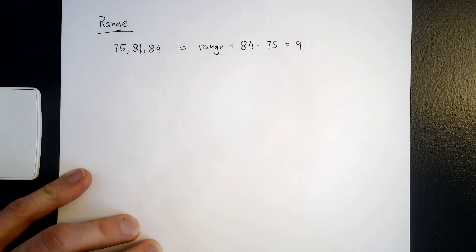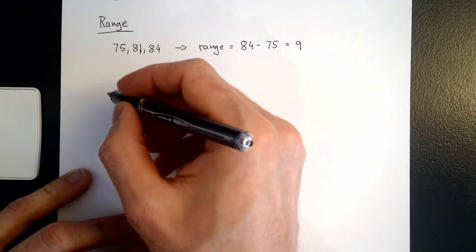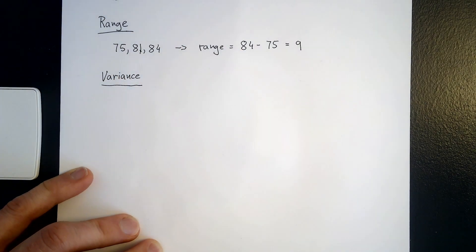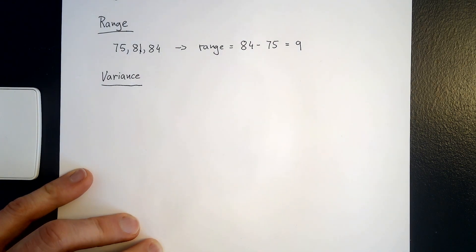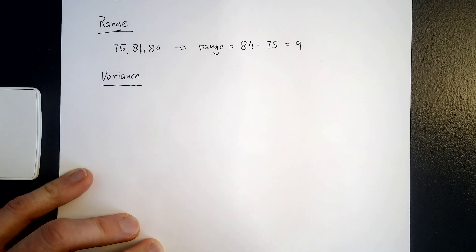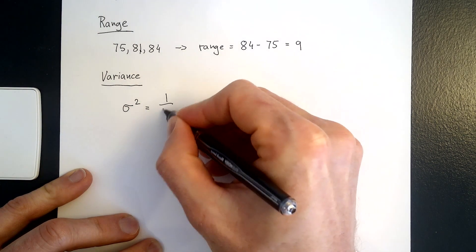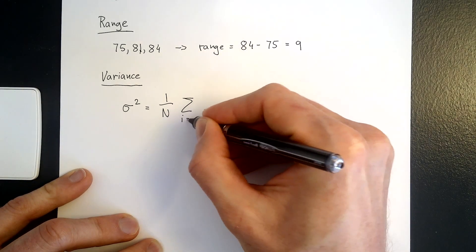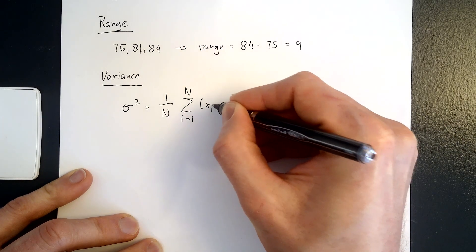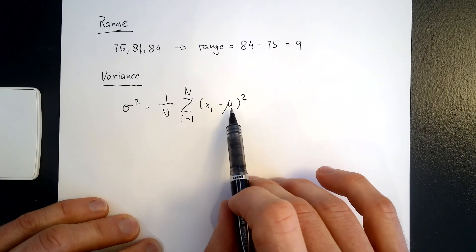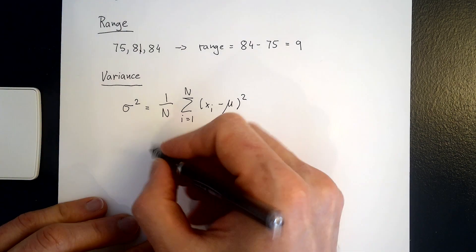A more useful measure of dispersion is the standard deviation and the variance. We have to distinguish between the population variance and the sample variance. Since we assume those 3 students are the entire class, we are going to use the equation for the population variance. The equation is σ² equals 1 over n, then using the summation sign where x_i is the individual observation and μ is the population mean.